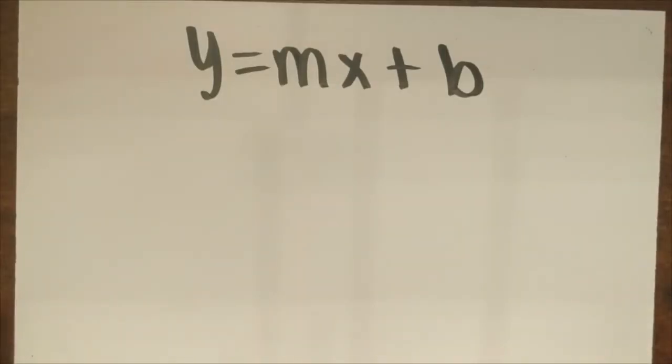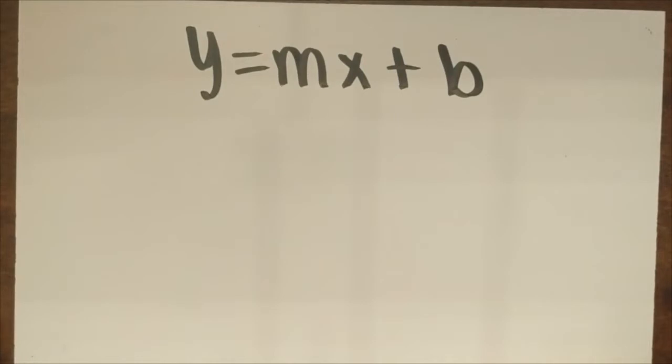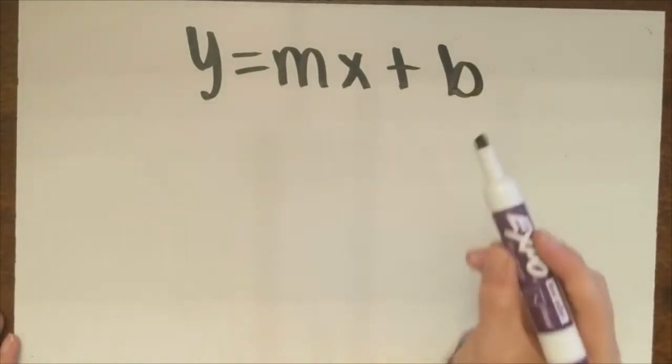To get started with this, we're going to review y equals mx plus b. Let's get started with our review of slope intercept form. Slope intercept form is y equals mx plus b.